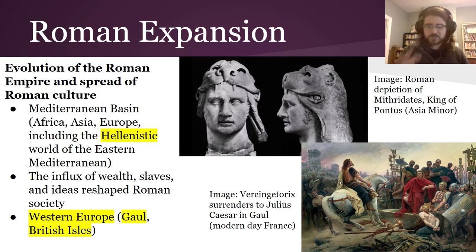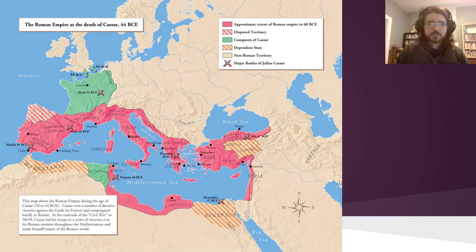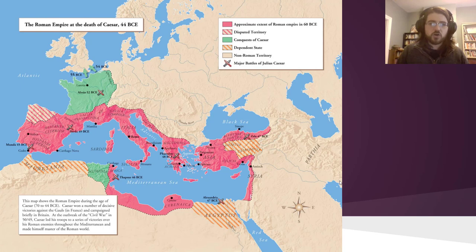Gaul is the area like modern-day France, and the British Isles being what we think of as the UK or England. A map shows the empire at the end of Caesar's life — the red there was the Roman Empire in 60 BCE, before Caesar did some of his most famous exploits. Caesar participated in the conquest of chunks of Numidia in North Africa, and most famously, conquering Gaul and even invading Britain, though he was not able to stay and take territory. When you conquer stuff as a Roman, you get very successful very fast from the money and the fame.